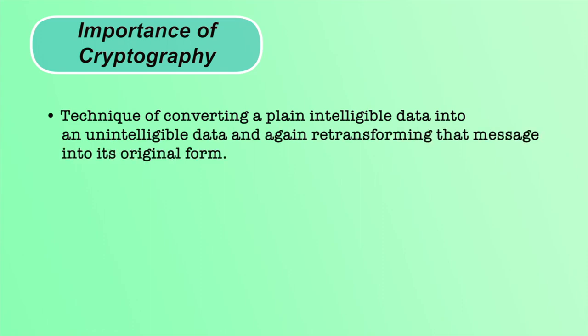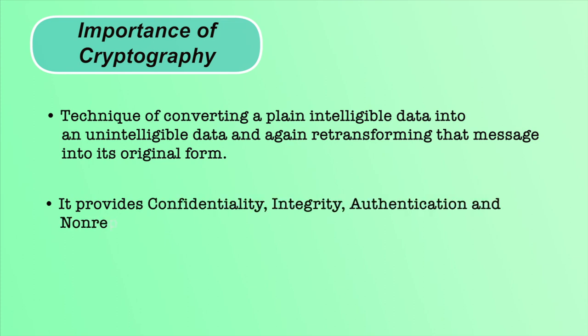Now let us discuss the importance of cryptography. It is the technique of converting plain intelligible data into an unintelligible form and again re-transforming that message into its original form. Cryptography plays an important role to provide confidentiality, integrity and availability of information. As the message is converted into non-readable form, the attacker will not be able to read it — in this way, data is confidential between the sender and receiver. By using digital signature, we can maintain integrity, authenticity and non-repudiation of the message. We will discuss the concept of digital signature in further slides.